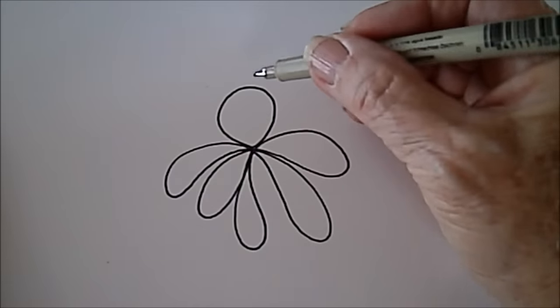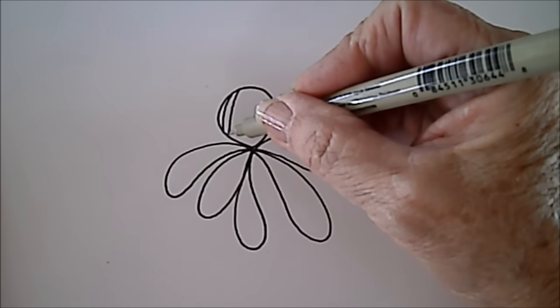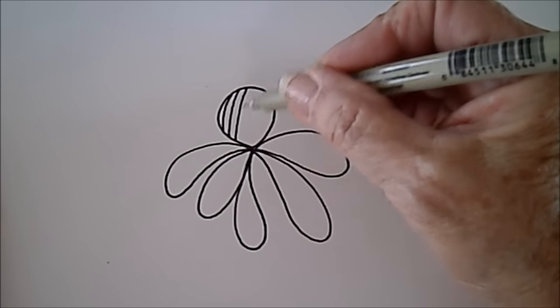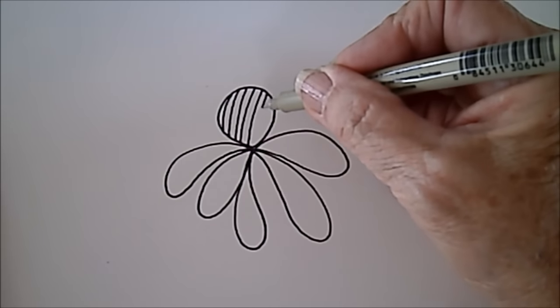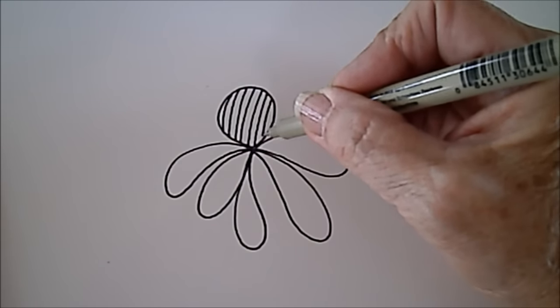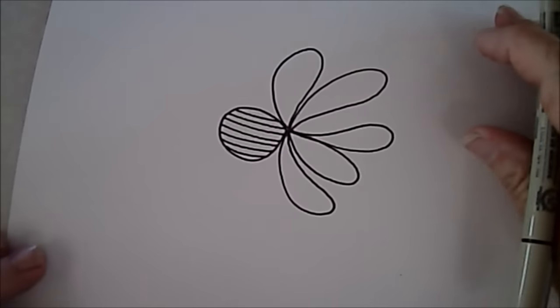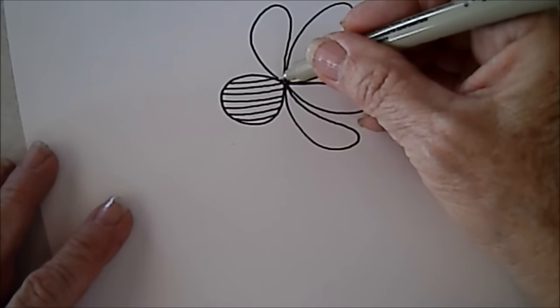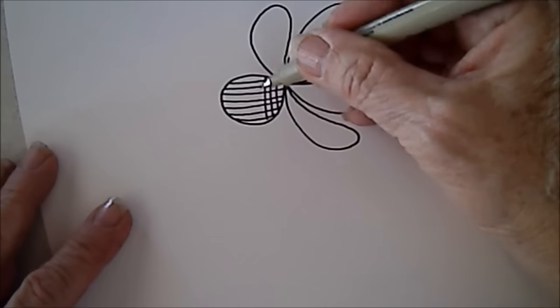Then we're going to crosshatch this little ball, which means I am going to just put lines through it, going one direction. Then I'm going to rotate this because it's a little easier for me. Then lines going opposite direction.